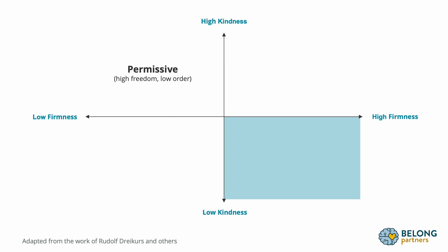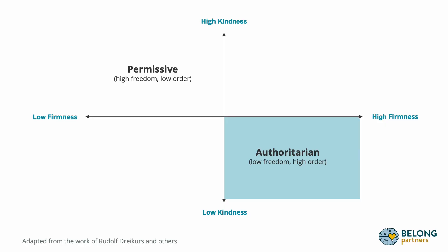Moving into that bottom right-hand corner — there is a lot of firmness but very little kindness. How would you describe a household or classroom that looks like that? Oftentimes people say it might feel rigid, or you might feel shame or fear. Others say it could be a place with really clear structure, quiet, and peace. This approach to teaching or parenting is referred to as authoritarian — very little freedom, but a lot of order.